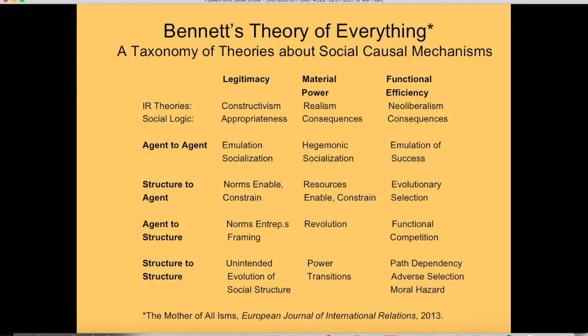The rows are different aspects of agent-structure relations. First, agent-to-agent, where agents are interacting directly. Second, structure-to-agent — how does structure constrain or enable the actions of the agent? Third, agent-to-structure — agents trying to shape and change structure, even creating revolutions. Fourth, structure-to-structure theories. One example is demographic structure: every society has a demographic structure where people get older whether they choose to or not, and as people age, the demographic structure of society changes.